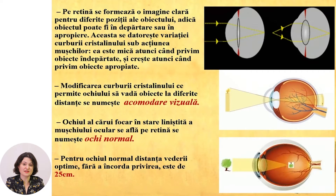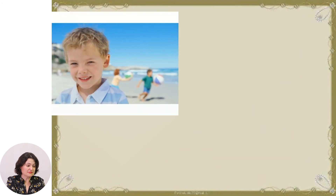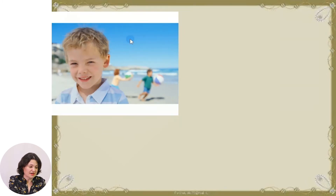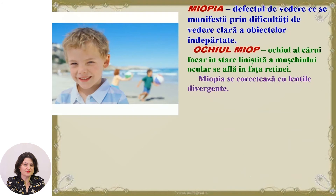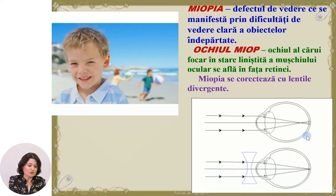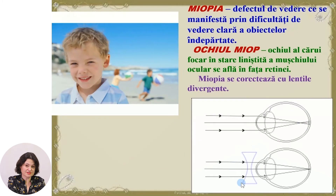Today we will analyze two vision defects. From the image we observe that the boy sees clearly objects that are close to him, but sees unclearly at a distance. This vision defect is called myopia. Myopia is a vision defect that manifests through difficulties seeing distant objects clearly. The myopic eye is the eye whose focal point, in a relaxed state, forms in front of the retina. To correct myopia, diverging lenses are used; if glasses with diverging lenses are placed in front of the eye, the image forms on the retina.